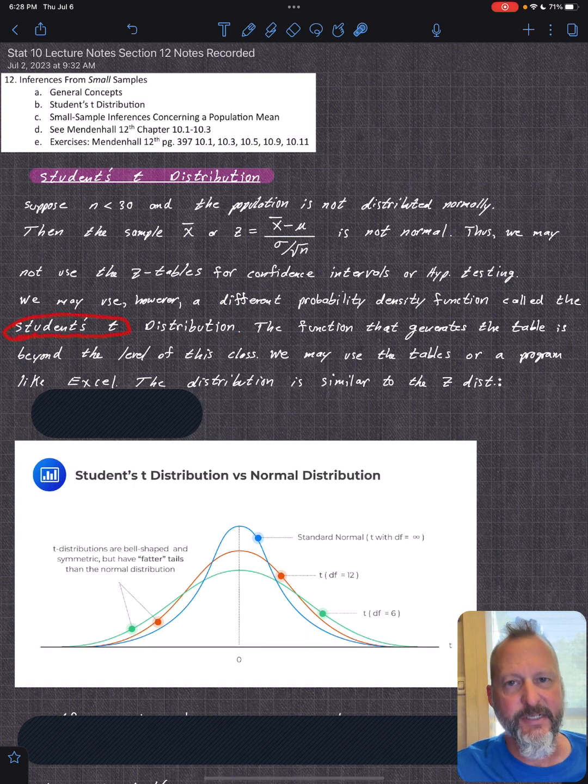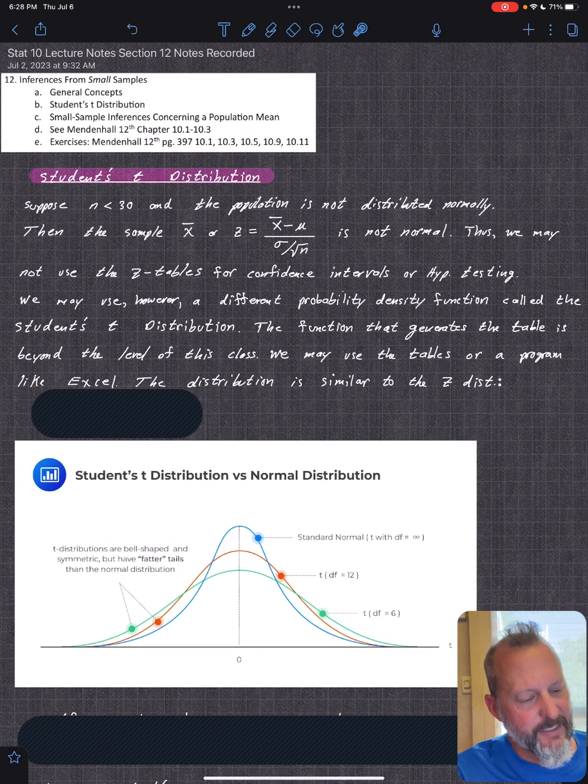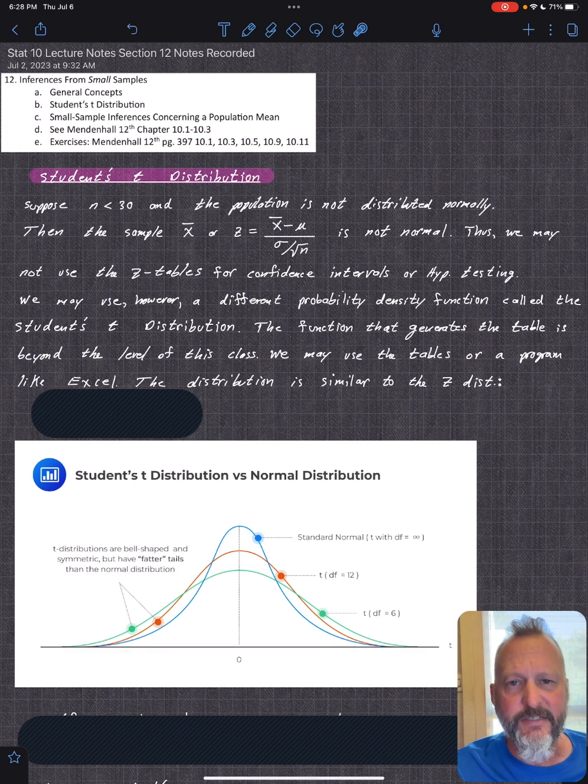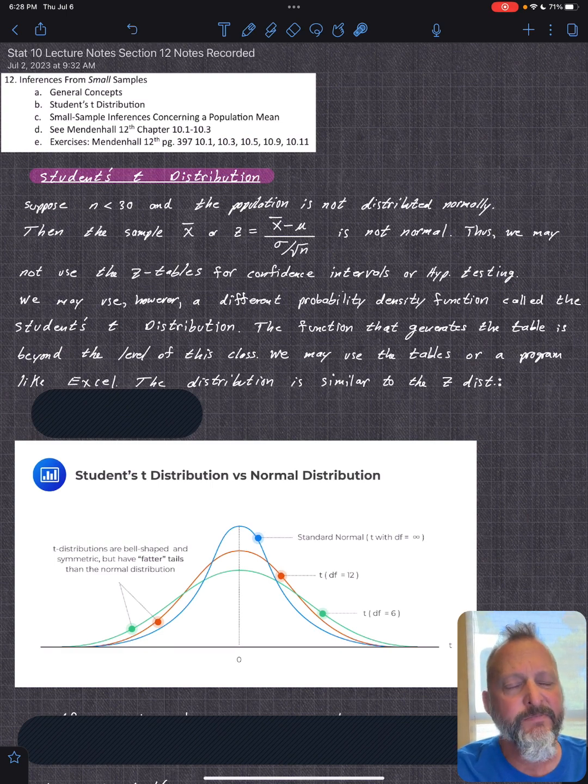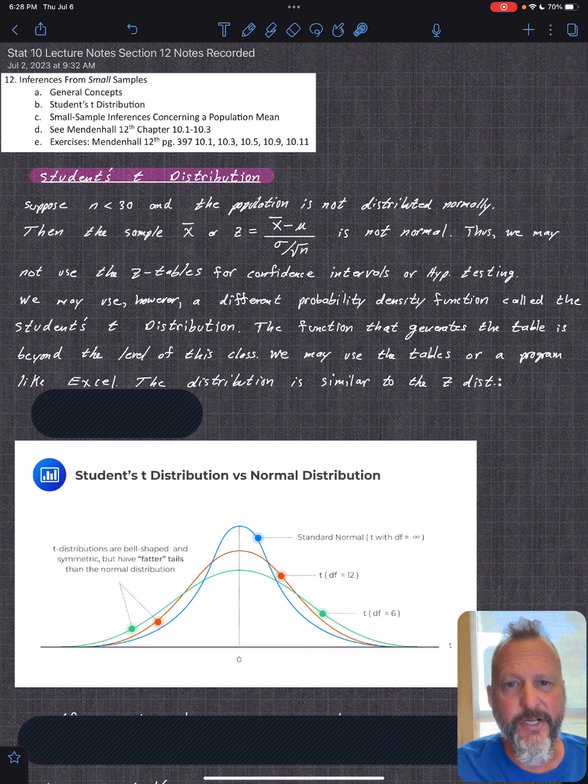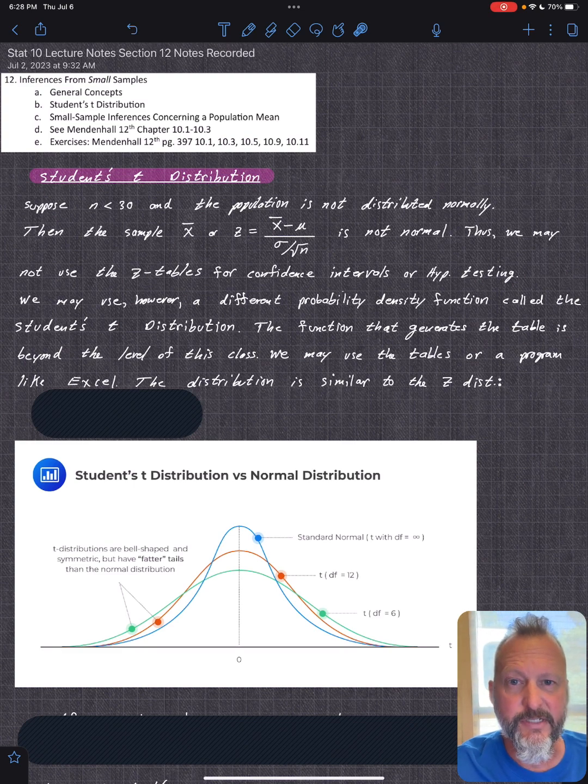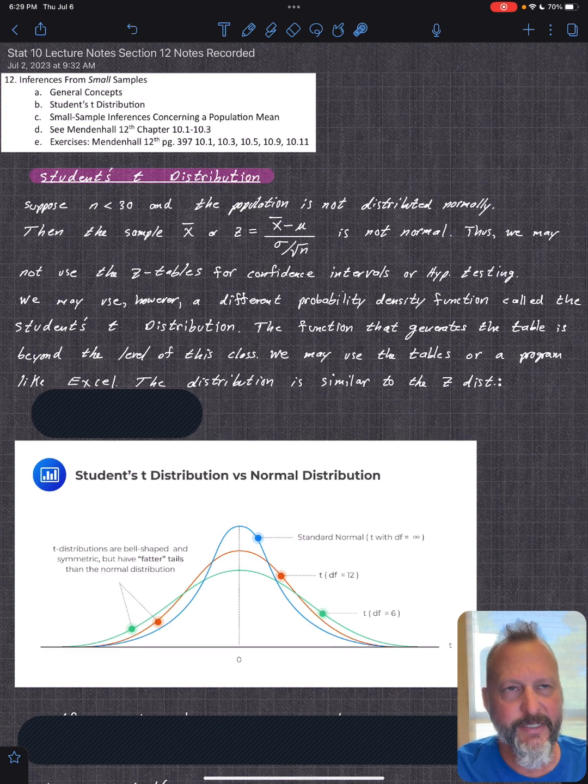The biggest difference between the z tables and the student t distribution is student t takes into account the sample size. If you look up the z tables, there's no n. For the student t distribution, we will see it uses the sample size. It actually uses degrees of freedom. So you just do n minus one.